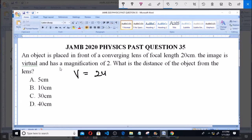Now, because the image is virtual, we'll be using this formula: 1 over f equals 1 over u minus 1 over v. So 1 over 20 equals 1 over u minus 1 over 2u, because v equals 2u.